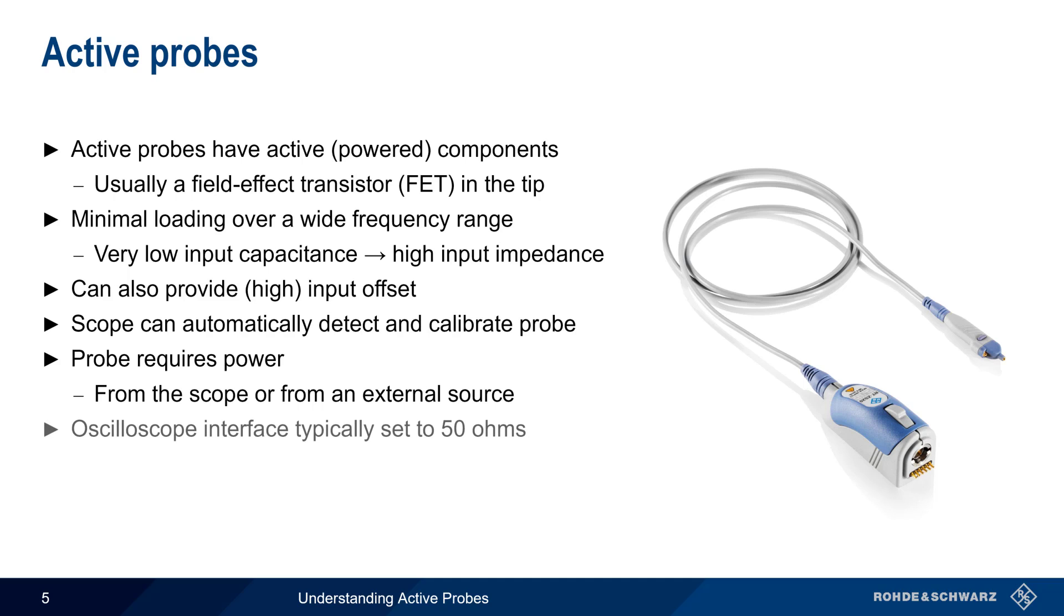Note that most active probes require the scope channel to be set to a 50 ohm termination. And although this presentation discusses the use of active probes with oscilloscopes, some active probes can also be used with other types of instruments, for example with spectrum analyzers.